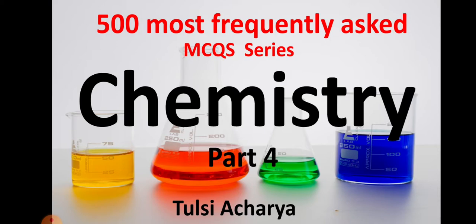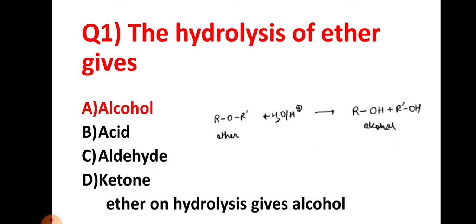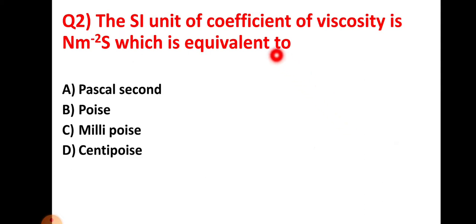Let's start with question number one: the hydrolysis of ether gives — option A: alcohol, option B: acid, option C: aldehyde, option D: ketone. If we see the reaction of hydrolysis of ether, we get alcohol, so alcohol is the right answer, which is option choice A.